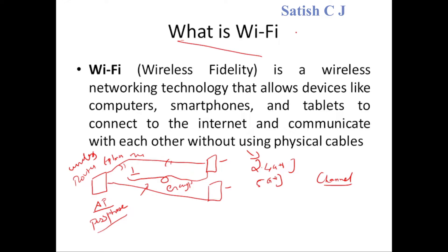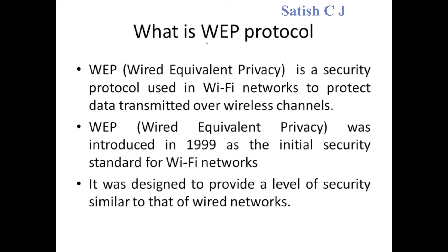Now let's look at WEP — Wired Equivalent Privacy — which is a protocol used for encrypting traffic between the access point and the client devices in a Wi-Fi network. It is called Wired Equivalent Privacy because it was designed to provide the same level of security as wired networks. This protocol was introduced in 1999 as the initial security standard for Wi-Fi networks.